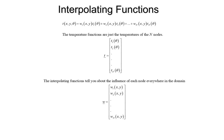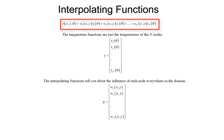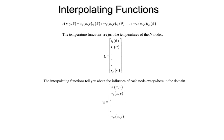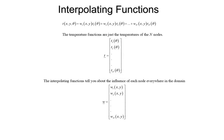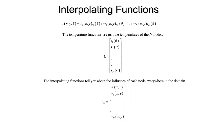Going back to our approximate temperature solution, T is the product of the weighting functions, interpolating functions, and these T values. T1 through TN in the vector T are just the temperatures at each of the N nodes that make up the mesh — for our case, the 10 different nodes. The interpolating functions assigned to each of these T values — W1, W2, etc. — tell you about the influence of the temperature of that node on other locations in the computational domain.